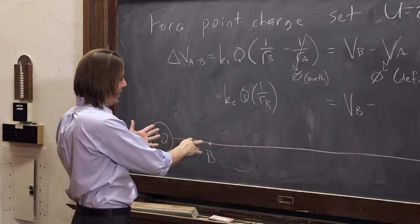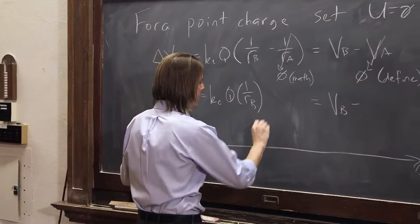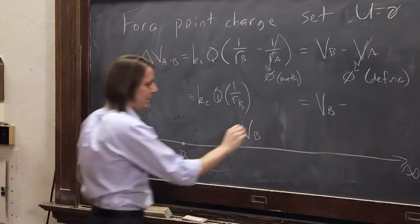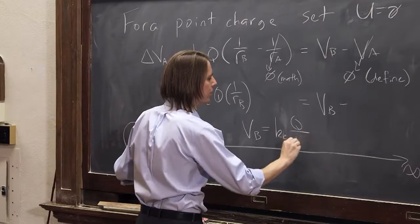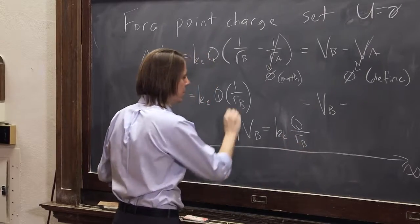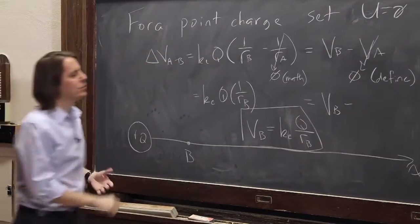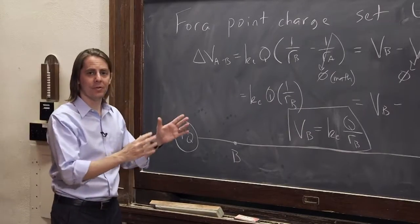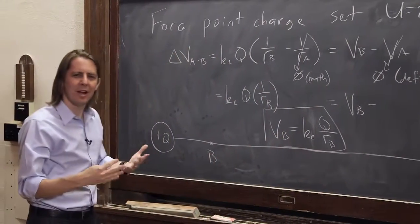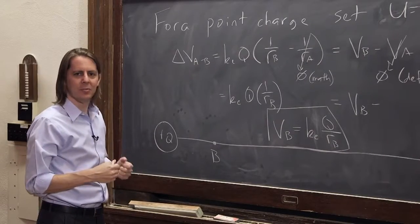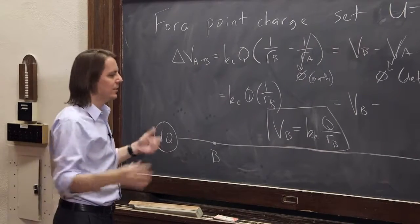Once you do that, you see the answer. The potential at any point B, really wherever you go, Vb equals Ke, and it's usually written like this, Q over Rb. And usually we write it that way. It's not a potential difference. We all agree where the zero is. We don't have to think about difference anymore. Now you can kind of think of it as an absolute potential.